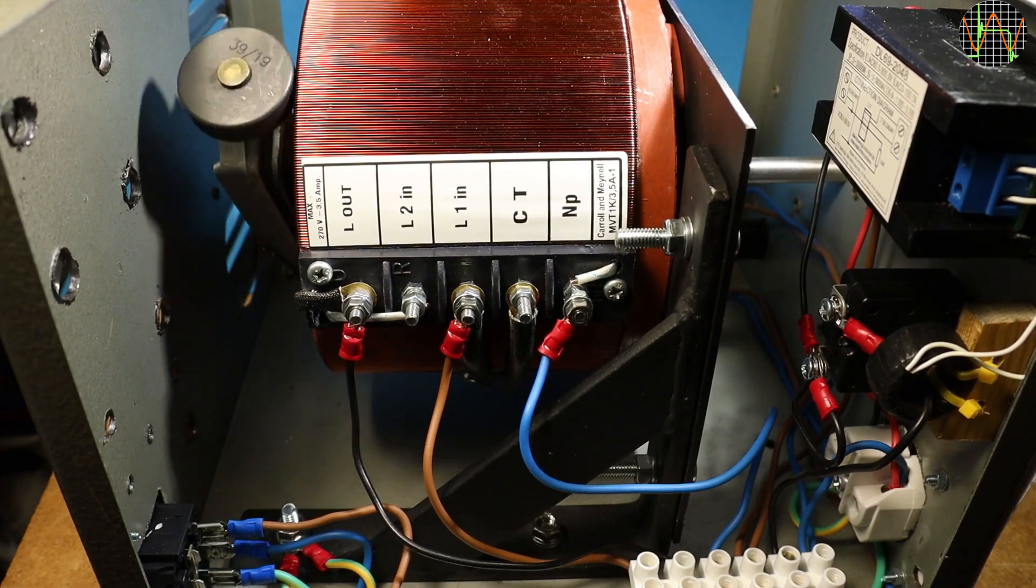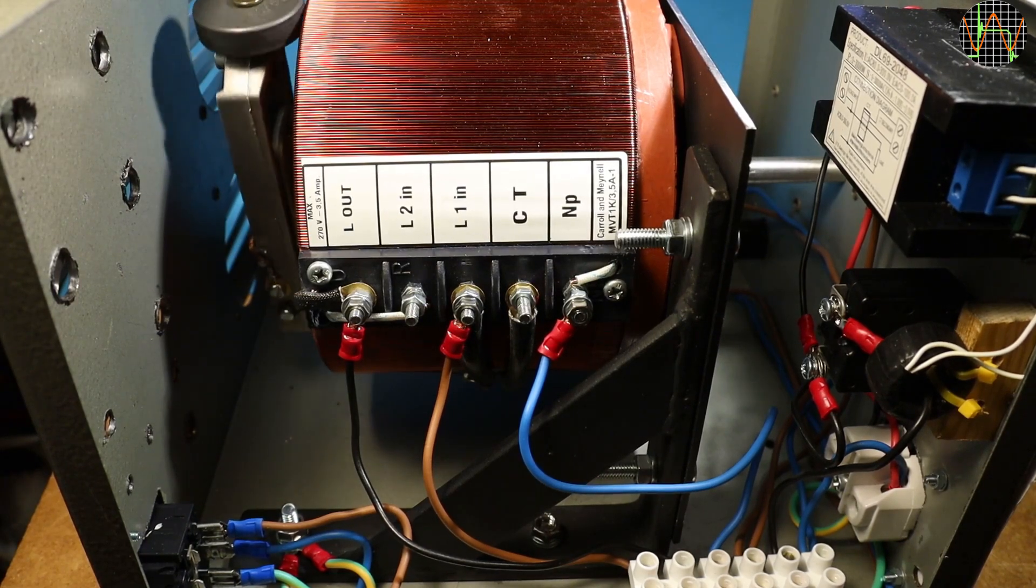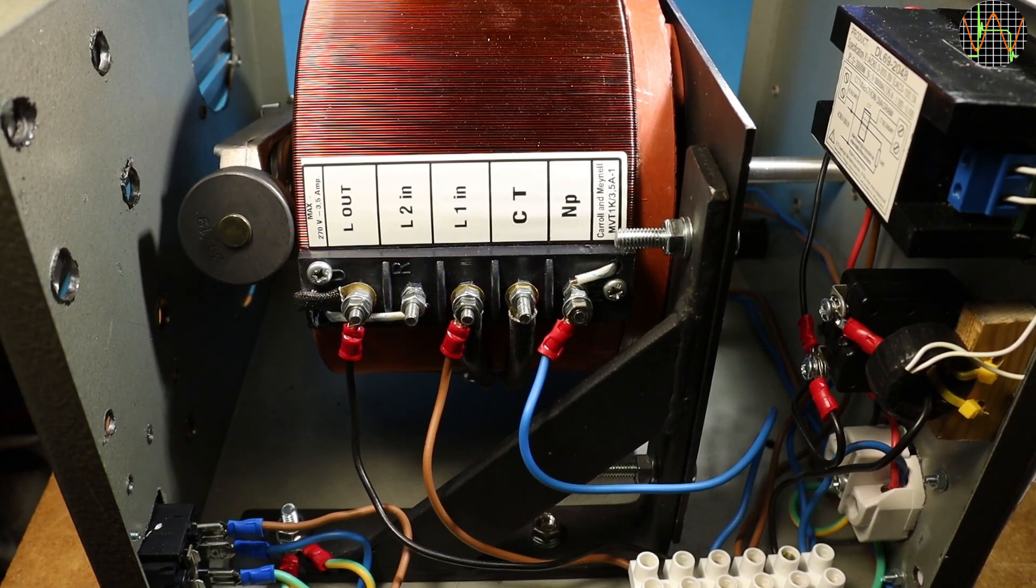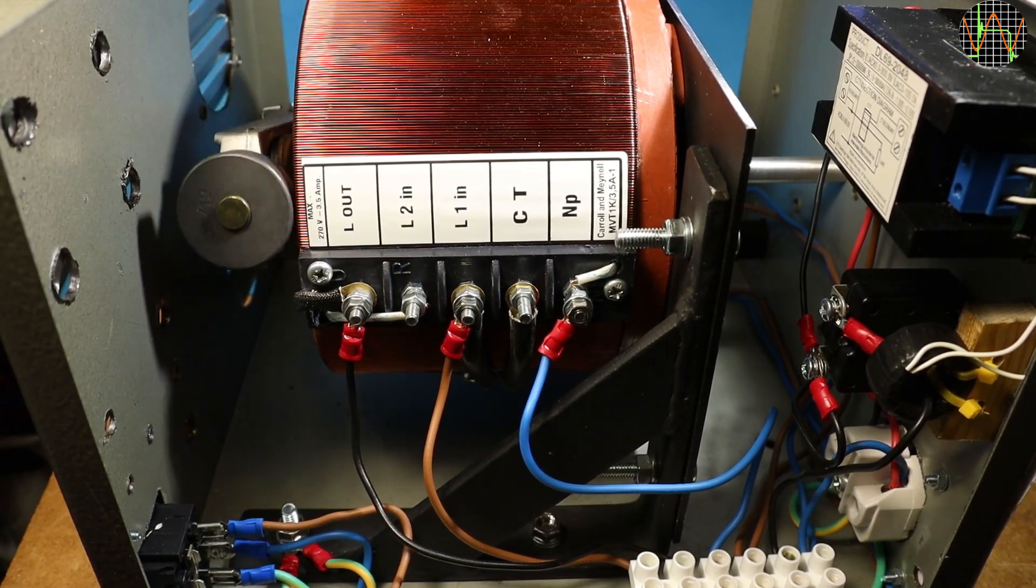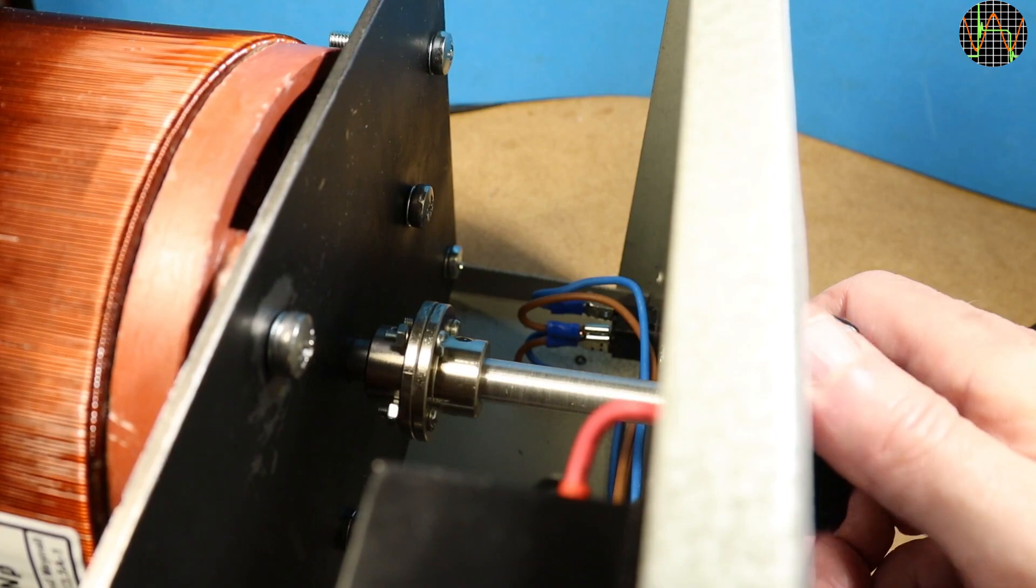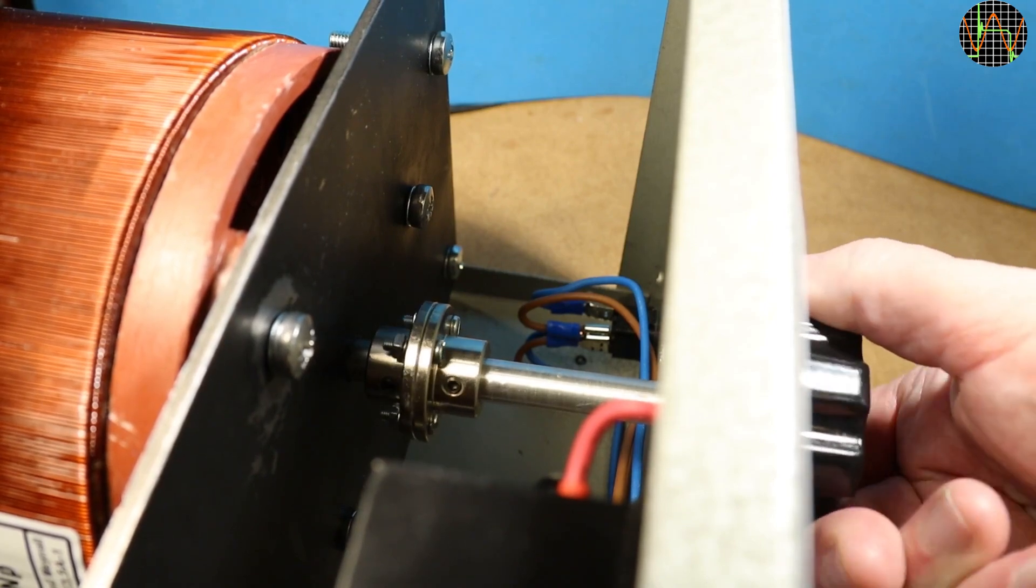This is the same view with the VARIAC added. What looked like a lot of empty space before is now pretty much filled up. Here is another look at the shaft coupling.